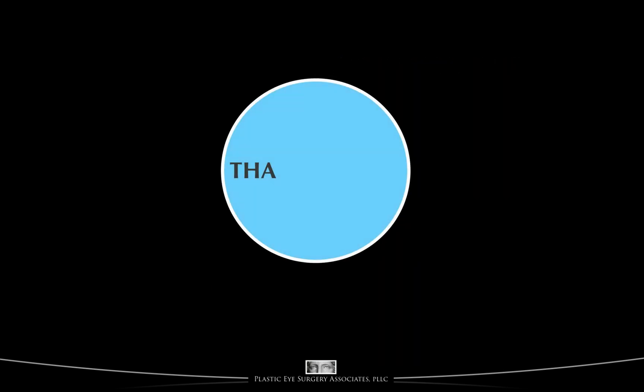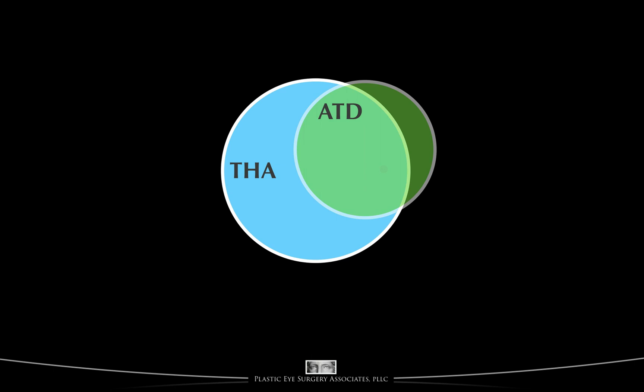Perhaps a Venn diagram will help with these concepts. The blue circle represents people who have THA — a recognized abnormality in their thyroid hormone levels, either hyper or hypothyroid. The green circle represents people who have ATD, or autoimmune thyroid disorder. Most of the people with ATD also have a thyroid hormone abnormality, but not all. The red circle represents people with thyroid eye disease. All of the people with TED also have ATD, by definition, but not all of them have a thyroid hormone abnormality.